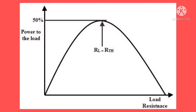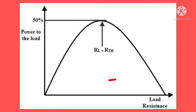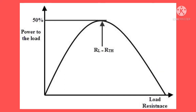From the graph we can observe the following facts. For the region where RL is less than Rth, the power consumed by the load increases when the load increases. For the region where RL is greater than Rth, the power consumed by the load resistor decreases even though the load resistor increases. And exactly at the particular point where RL is equal to Rth, the power consumed by the load resistor is maximum.